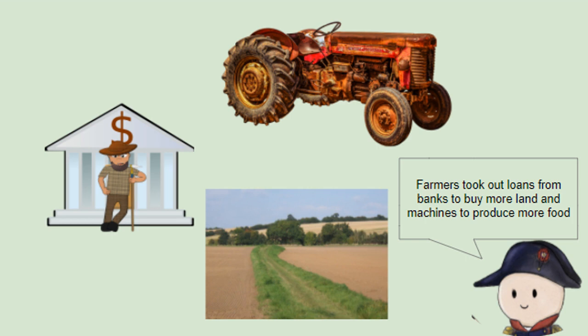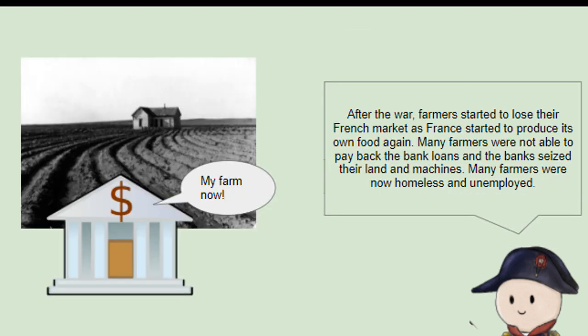To get more land and machines, the farmers would go to the banks and take out loans. The war soon ended, though, and farmers started to lose their French market as the French started to produce their own food again. Many farmers were not able to pay back the bank loans, and the banks seized their land and machines. This created a lot of farmers who were now homeless and unemployed, wandering around the United States.